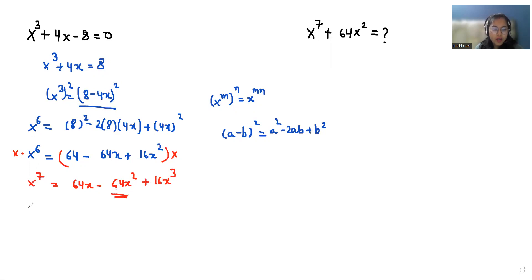So x⁷ + 64x² = 16x³ + 64x. We can factor this as 16(x³ + 4x). Since x³ + 4x = 8, we have 16 times 8.